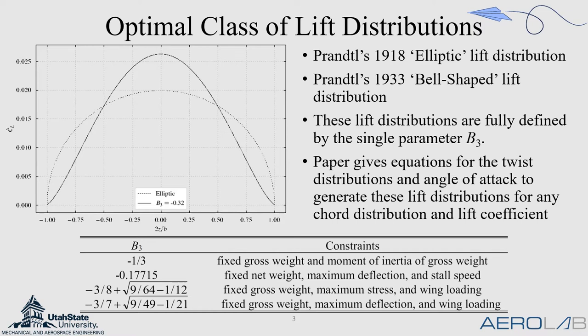These twist distributions are such that generate an optimal class of lift distributions, some of which are Prandtl's elliptic lift distribution or the bell-shaped lift distribution. This class is fully defined by the single parameter B3. This class is termed optimal because it contains lift distributions that will minimize induced drag for several different structural and aerodynamic design constraints, some of which are listed here in this table.